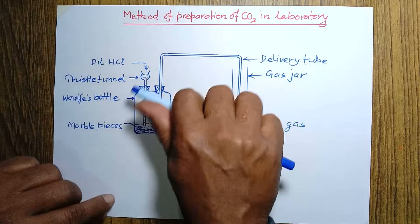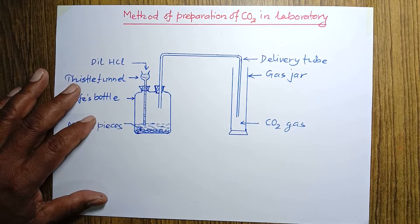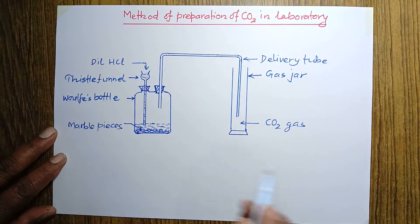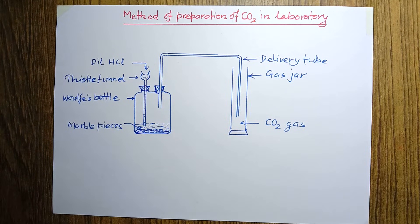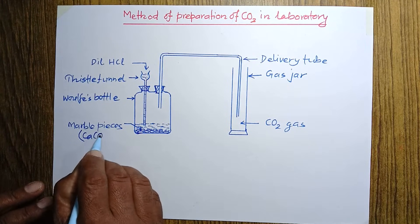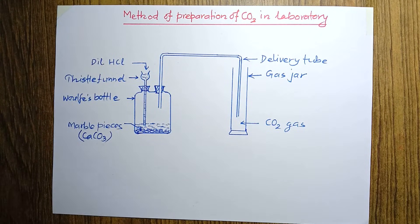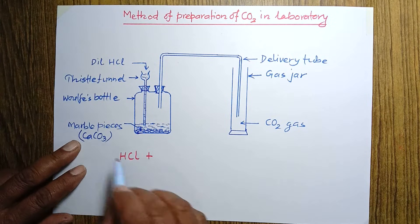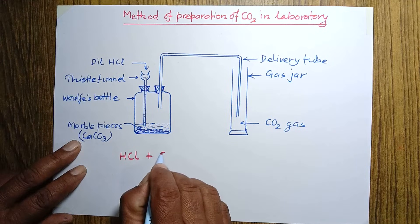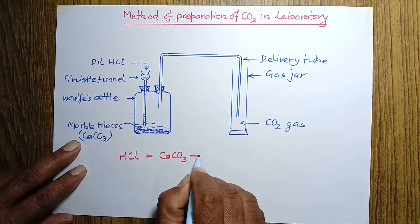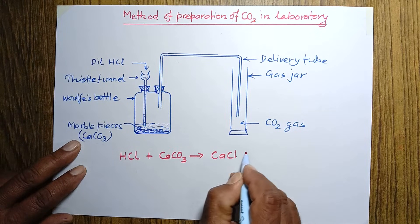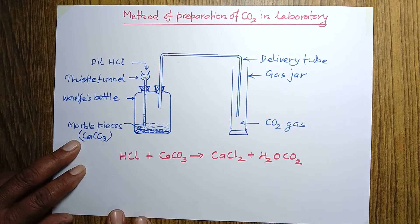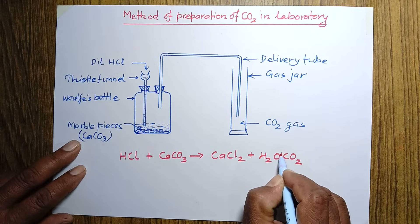I made a diagram to represent the method of preparation of carbon dioxide gas in the laboratory. In this method there are two substances which react with each other. One is dilute hydrochloric acid. When dilute hydrochloric acid reacts with marble pieces — that is calcium carbonate — they form calcium chloride, water, and carbon dioxide.